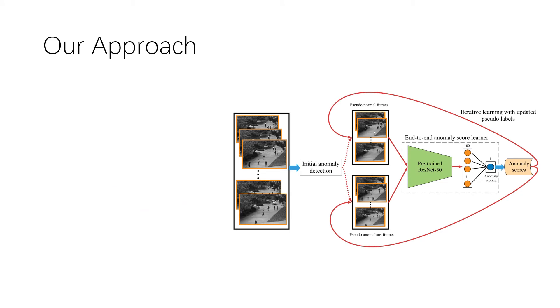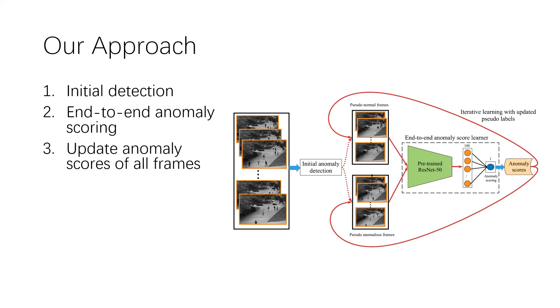Our approach consists of five steps. First, initial anomaly detection. Second, end-to-end anomaly scoring using the pseudo-labels. Third, update the anomaly scores using the new model.